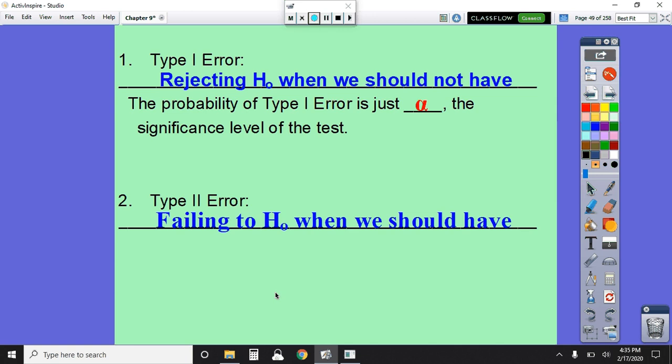Type 1 error was when we rejected the null hypothesis, but we really shouldn't have. And the probability of making this type 1 error, we said in the previous video, was our alpha level, whatever that was stated to be in the problem, whether it was 5%, 10%, 1%, or some other percent. But 1, 5, and 10 were the common alpha levels.